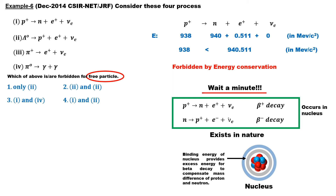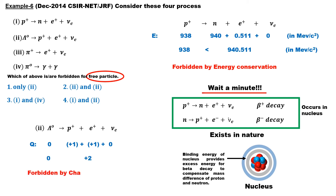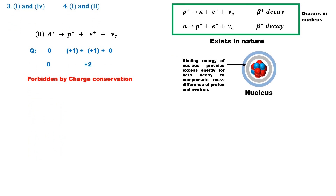The second reaction involves the lambda particle decaying into a proton, positron, and neutrino. Lambda is a neutral particle, while the proton and positron both carry positive electric charge, and the neutrino is neutral. Since the total charge of the parent (0) does not equal the total charge of the daughters (+2), this reaction violates charge conservation and is forbidden.